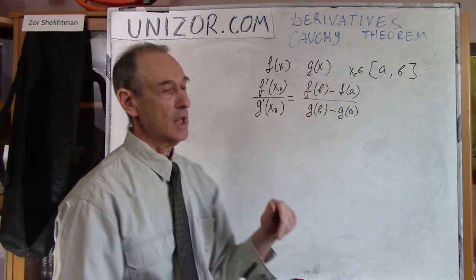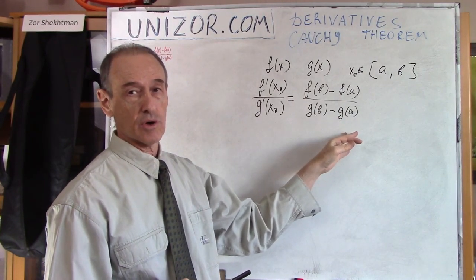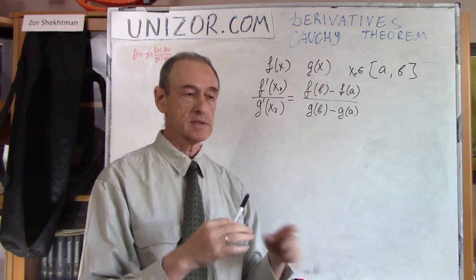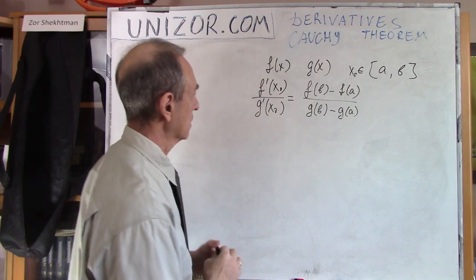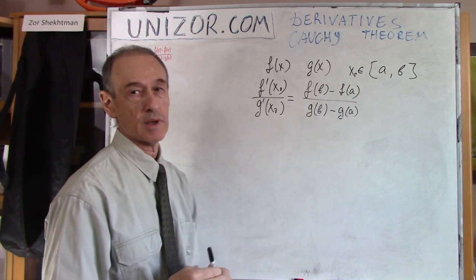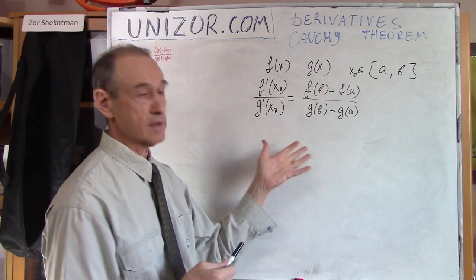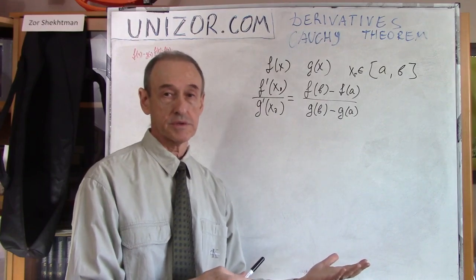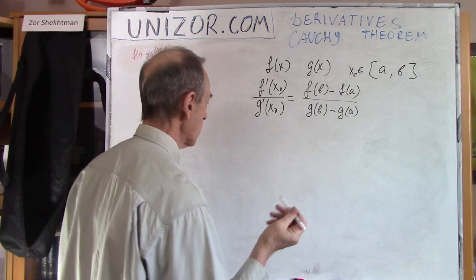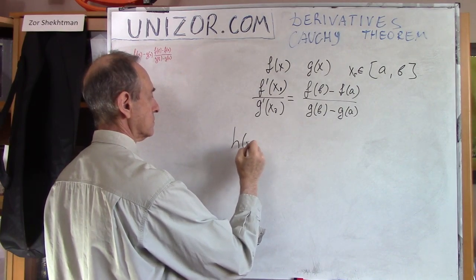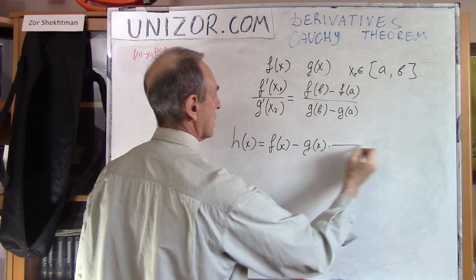This is increment of the function on this segment. This is increment of another function on this segment. Obviously, when I'm saying something like this, I assume that this is not equal to zero, and this is not equal to zero. All I have to do is basically prove this one. As with the previous case in the Lagrange theorem, I will introduce another auxiliary function which is a combination of these and use Rolle's theorem, from which I have this equation derived.